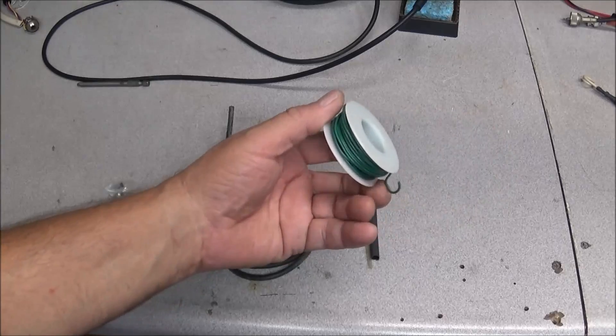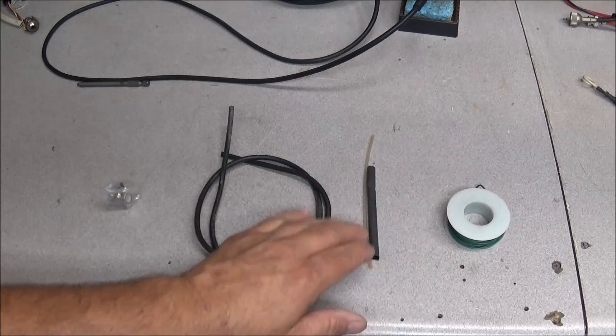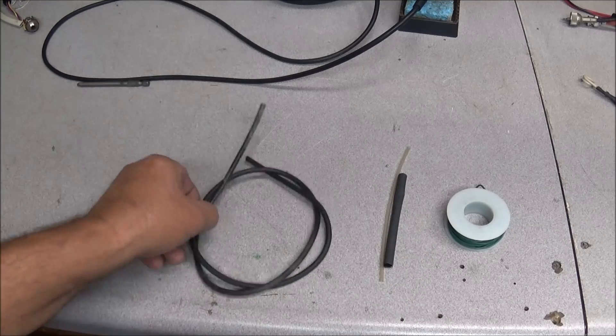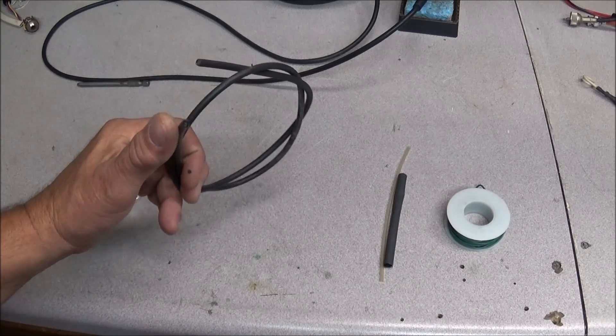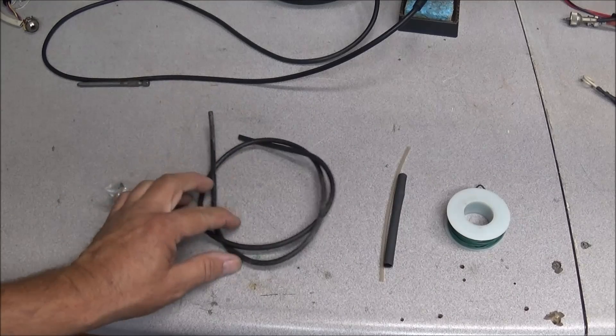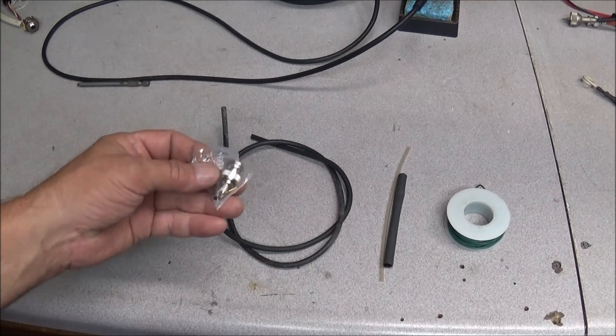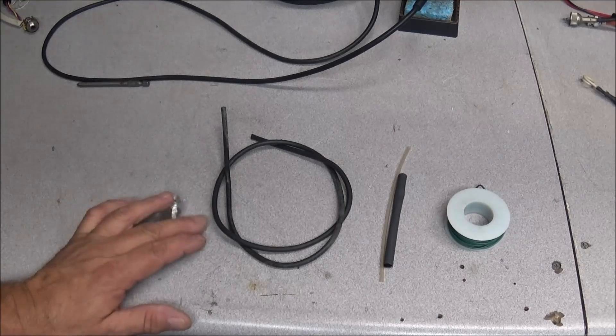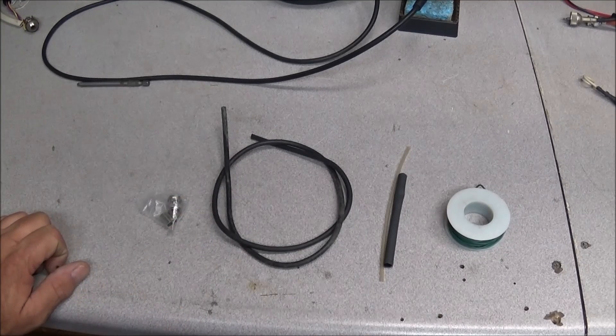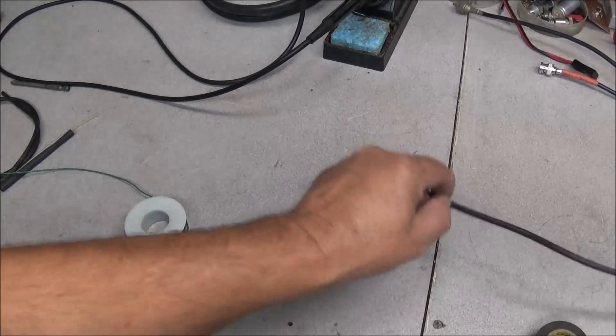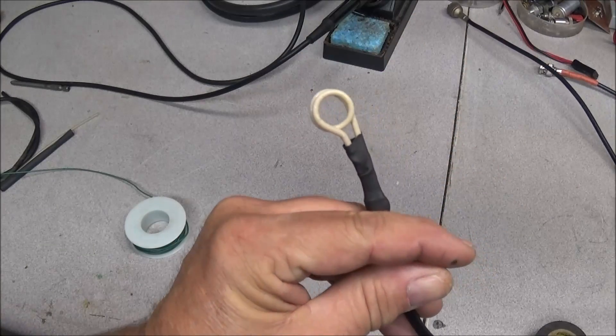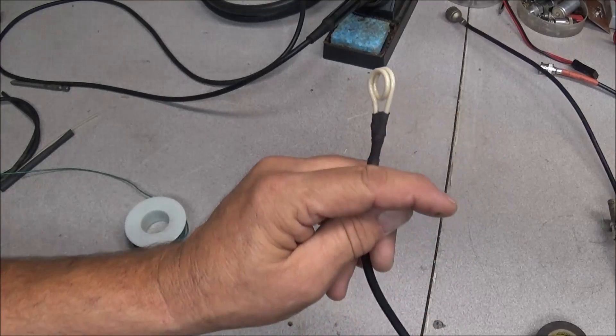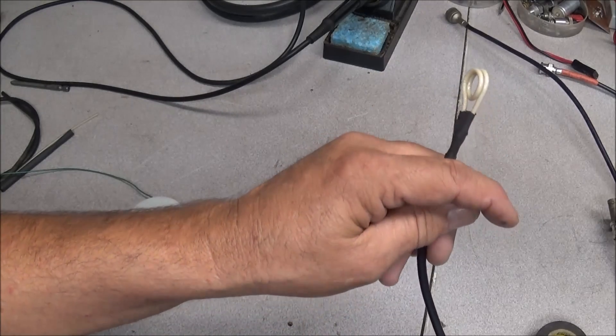So how do you make that? Well, I'm going to show you. What we have is just a roll of wire, couple sizes of heat shrink tubing, a coax that has the solid conductor on the center, and a BNC connector.